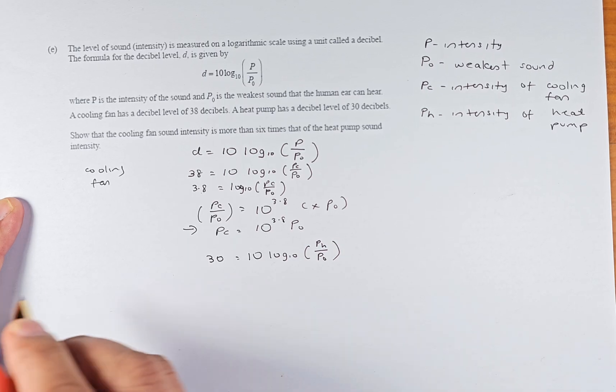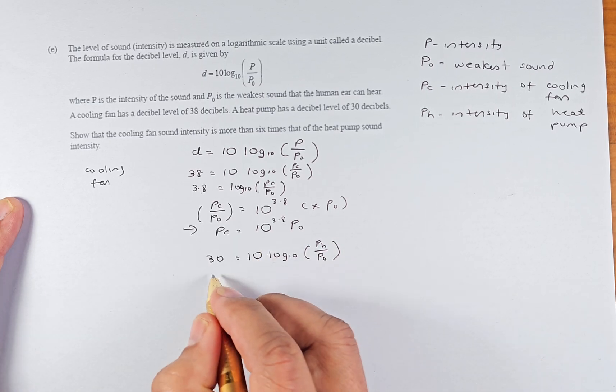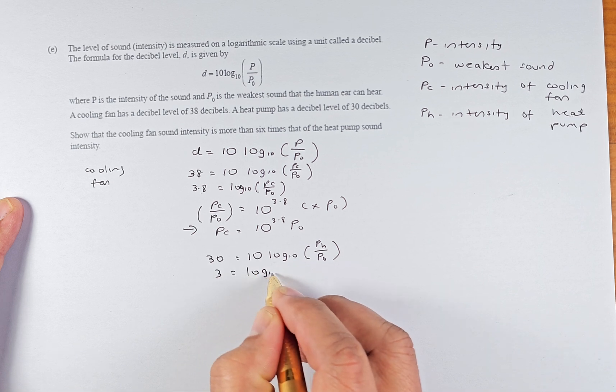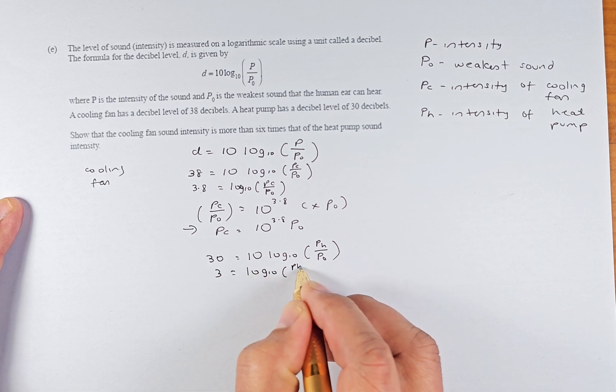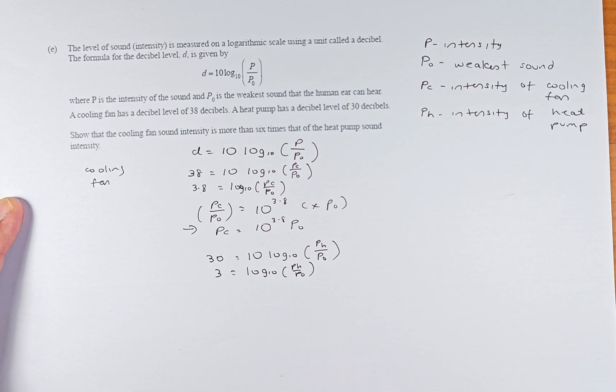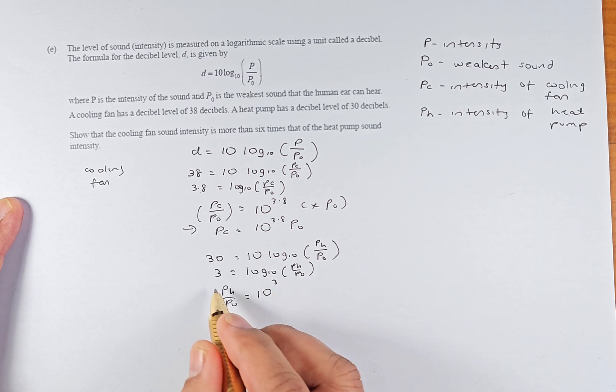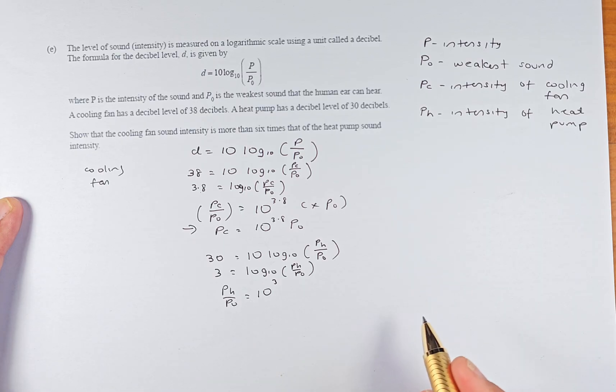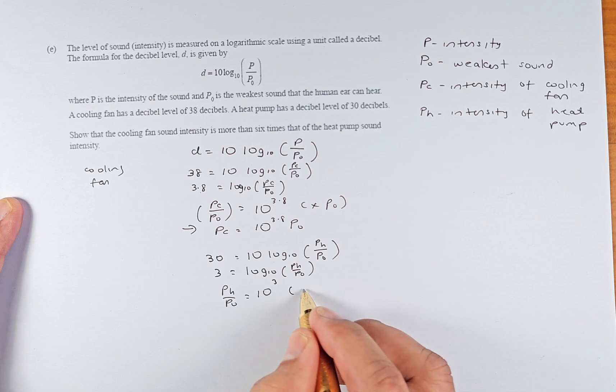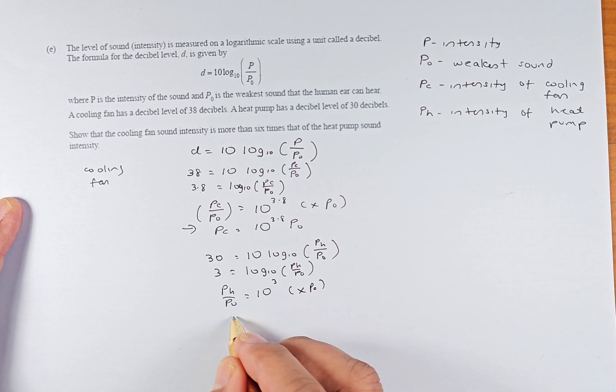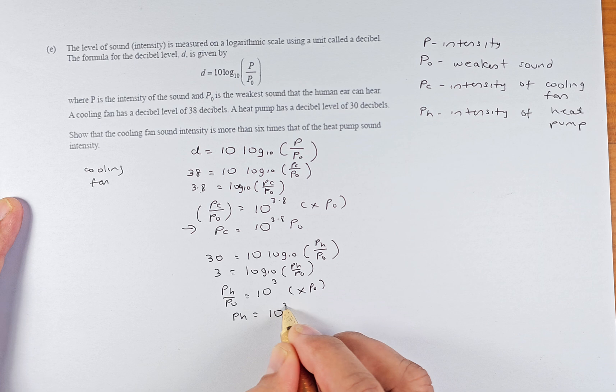We're going to divide by 10 throughout to cancel the 10, so 3 = log₁₀(Ph/P₀). Now we convert the log form to the index form, so Ph/P₀ = 10³. If you're not sure, watch my video on how to convert log form to index form and vice versa. Again, we multiply by P₀, and the equation becomes Ph = 10³ × P₀.